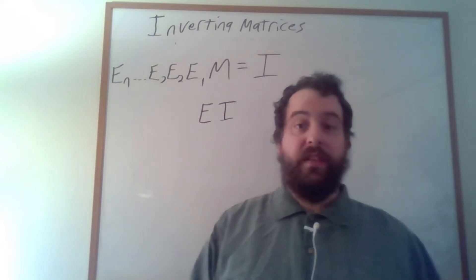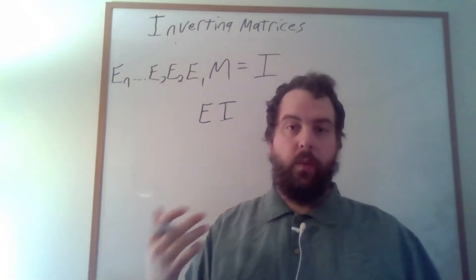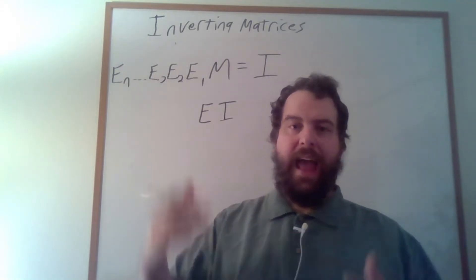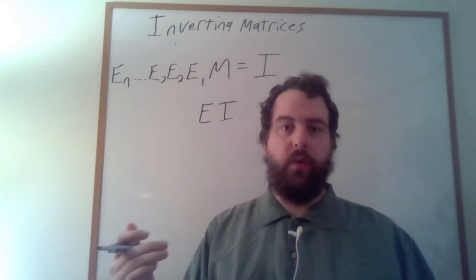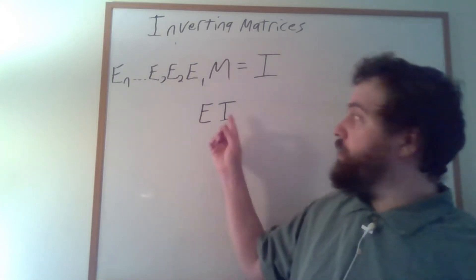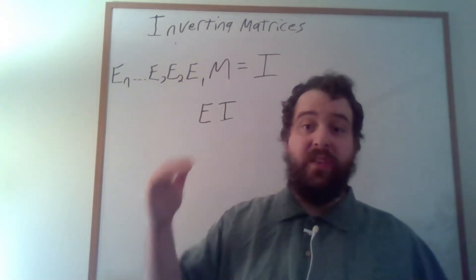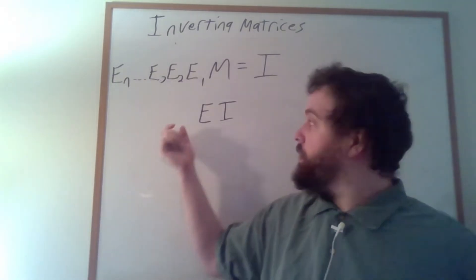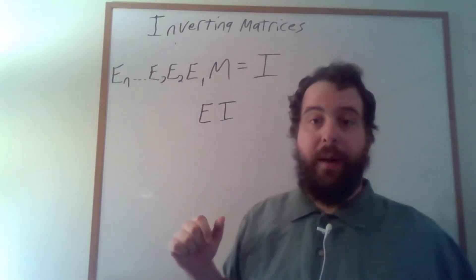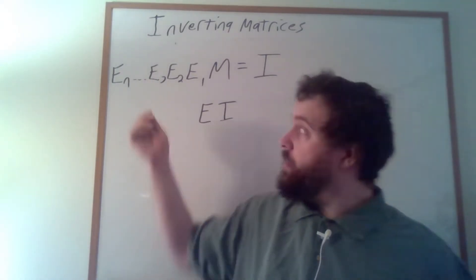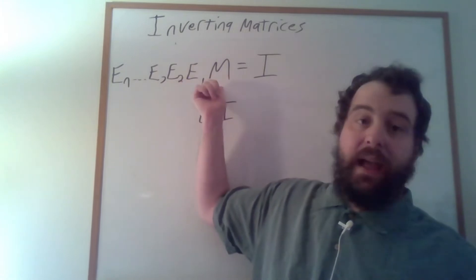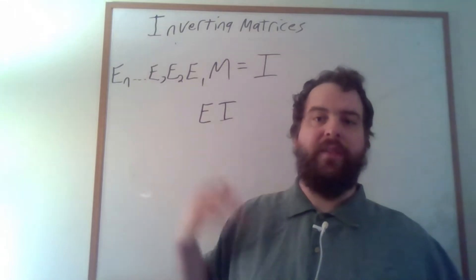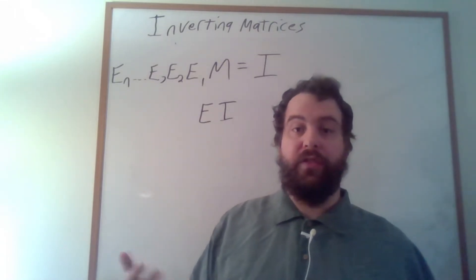So for instance if we want to know what the matrix is corresponding to the row operation that adds twice row one to row two, all we need to do is start with the identity matrix and add twice row one to row two. That gives us a matrix corresponding to that elementary row operation, and we can multiply that matrix by another matrix to apply that row operation, or we can multiply it by a vector to apply that row operation to that vector.